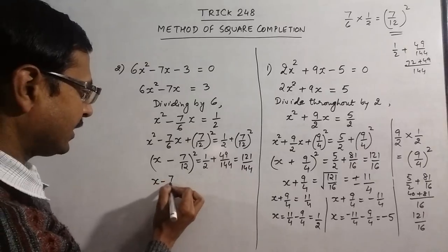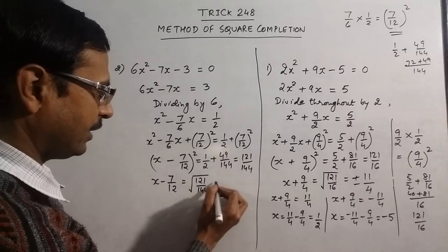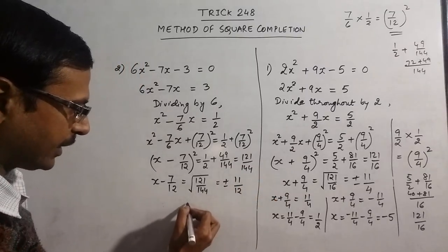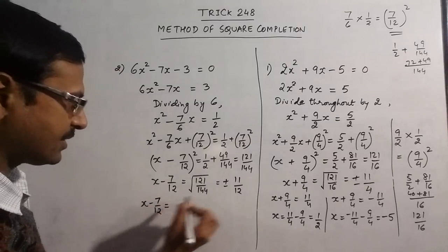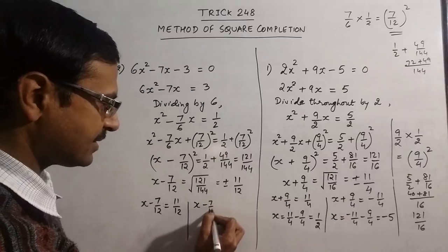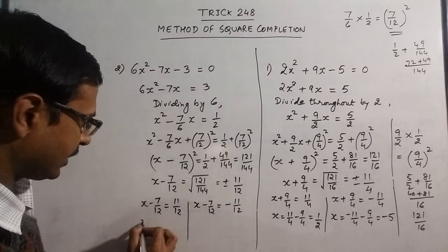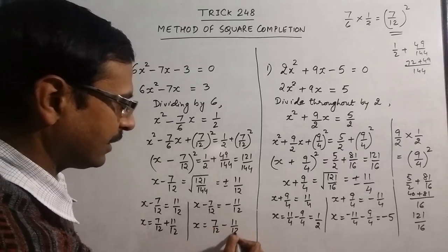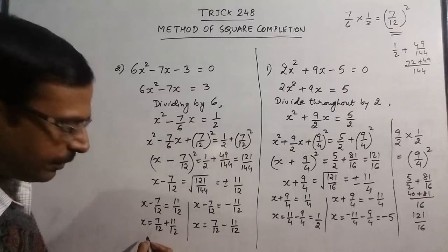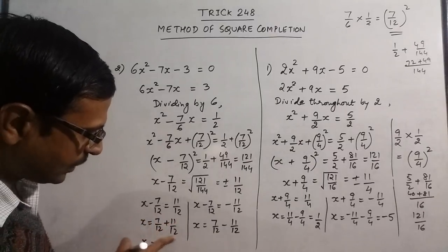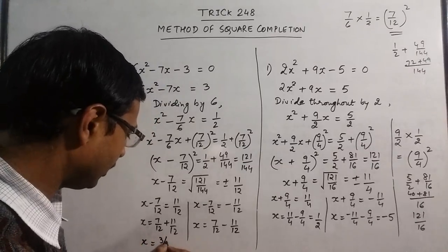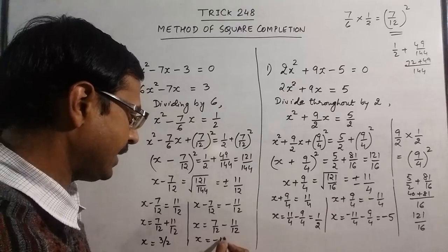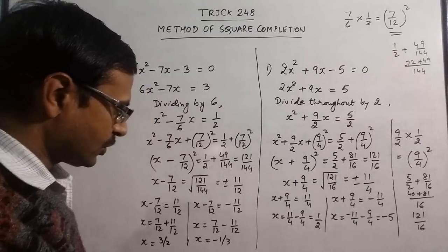Removing the square sign gives a square root on the RHS, and removing the square root gives ± answers. √121 = 11 and √144 = 12. So x − 7/12 = +11/12 or x − 7/12 = −11/12. This gives x = 7/12 + 11/12 = 18/12 = 3/2, and x = 7/12 − 11/12 = −4/12 = −1/3. So x = 3/2 or x = −1/3, which completes the solution.